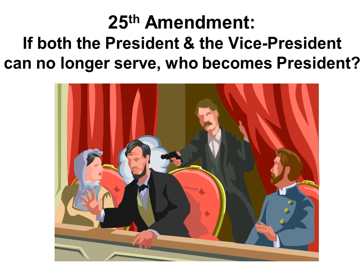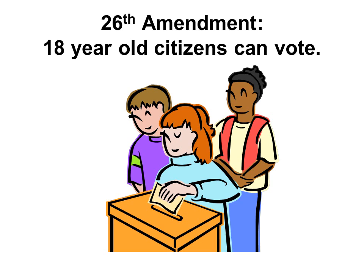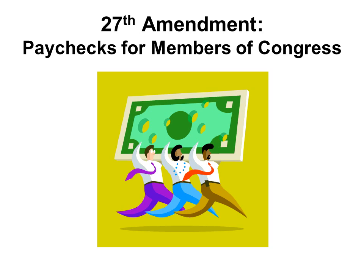This question came up after the assassination of President Lincoln and President Kennedy. The 26th amendment says that 18-year-old citizens and older can vote. The 27th amendment talks about when members of Congress are paid.